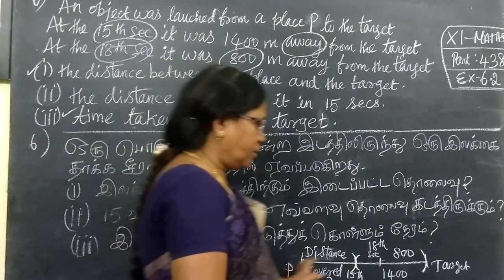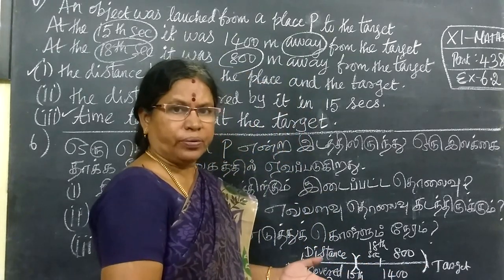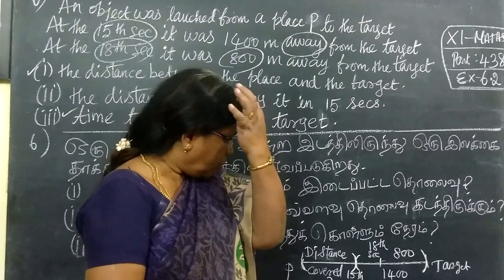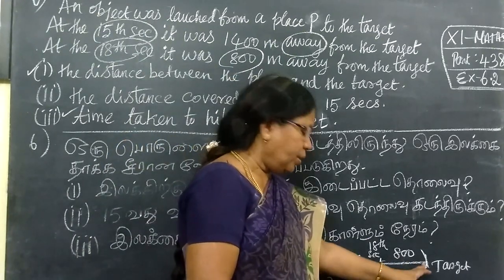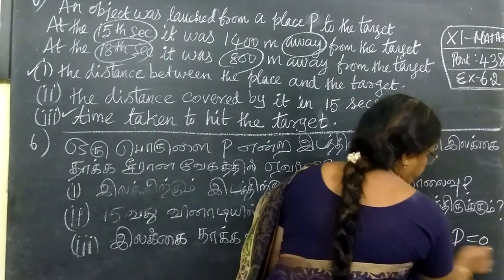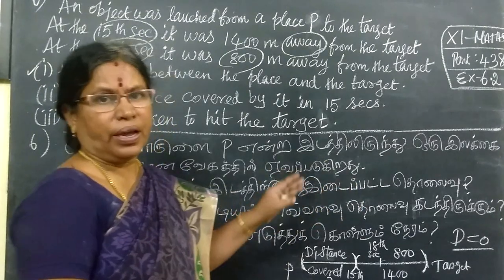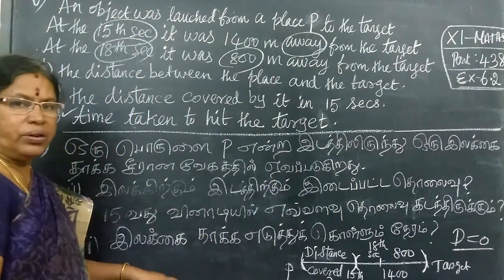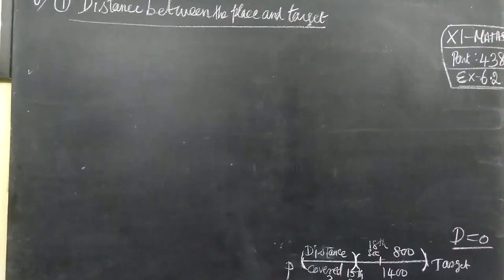The last one is the total distance, which is 0 when it reaches the target. The total distance is 0, so if d equals 0, what is t? This is the correct condition when we solve it.